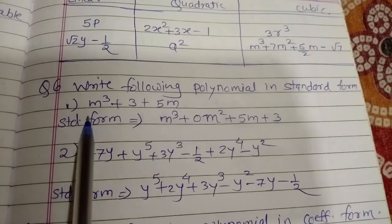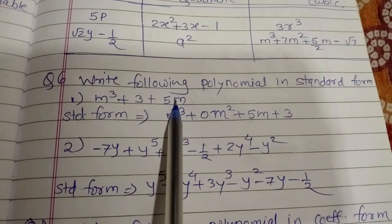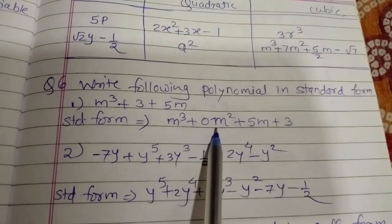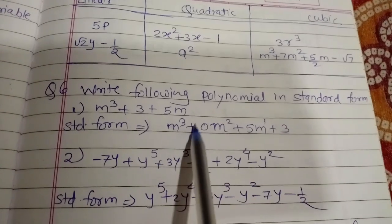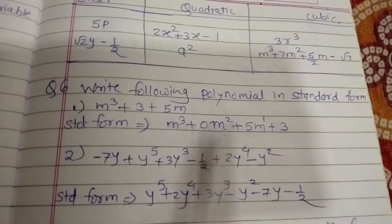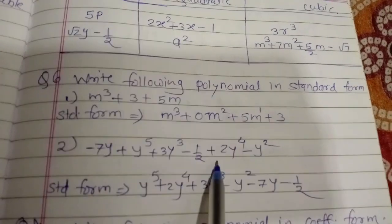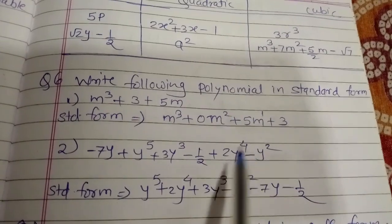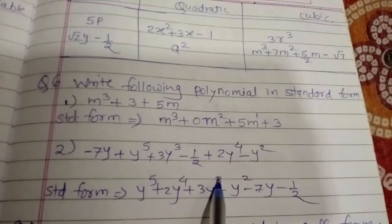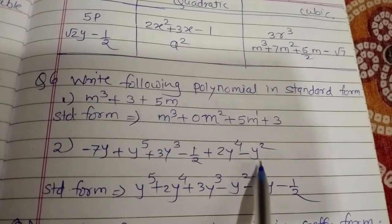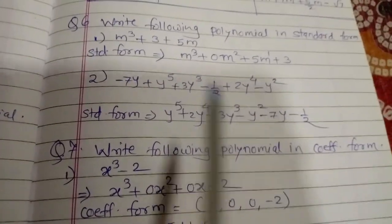Question number 6: write the following polynomials in standard form. Standard form means writing terms in descending order including missing terms. For m^3 + 3 + 5m, the missing term is the square term, so we write: m^3 + 0m^2 + 5m + 3. For -7y + y^5 + 3y^3 - 1/2 + 2y^4 - y^2, the highest term is y^5, so: y^5 + 2y^4 + 3y^3 - y^2 - 7y - 1/2. Similarly solve the remaining examples.